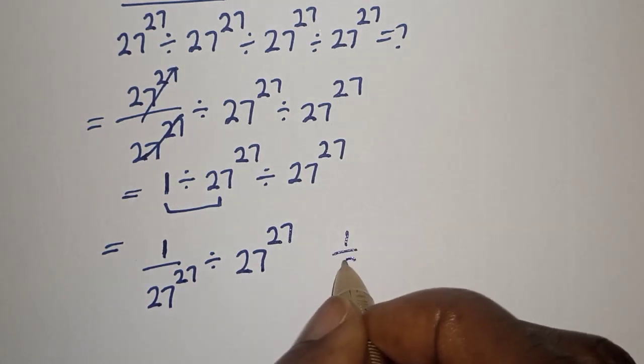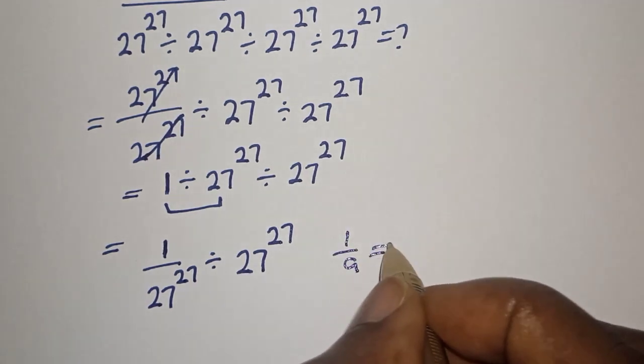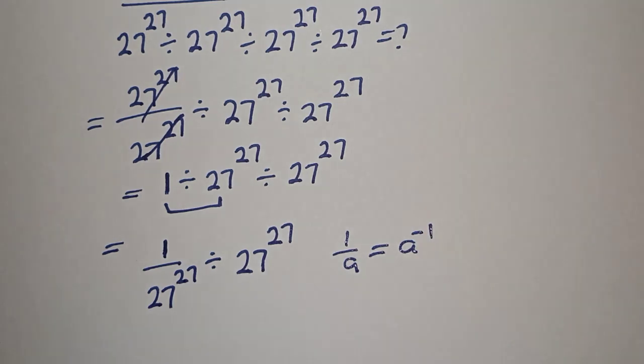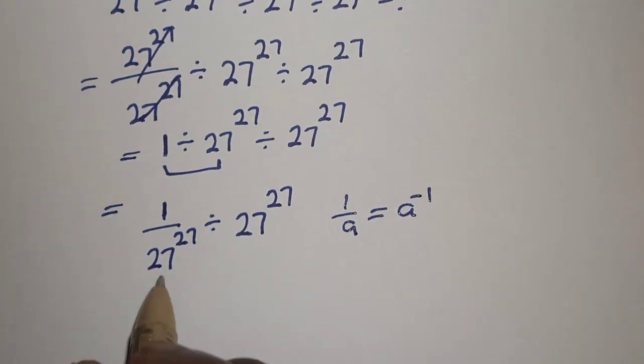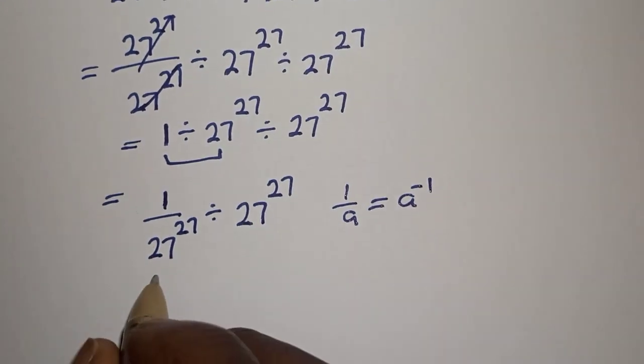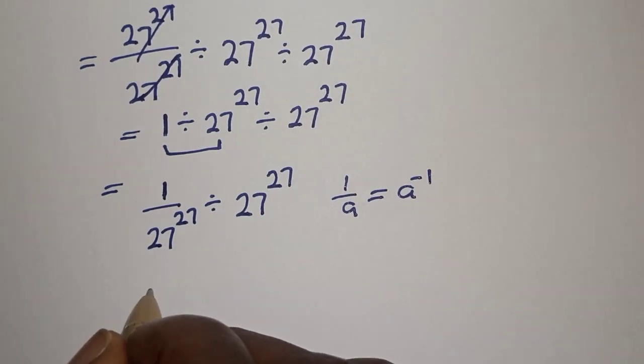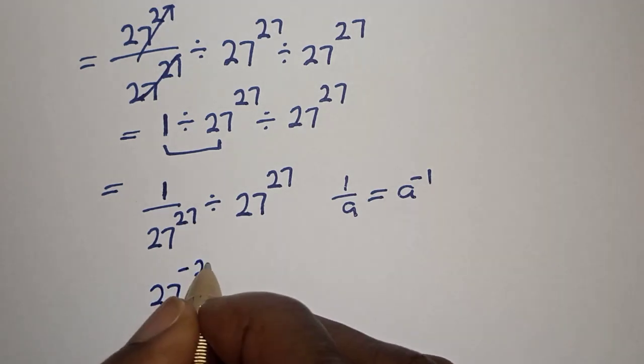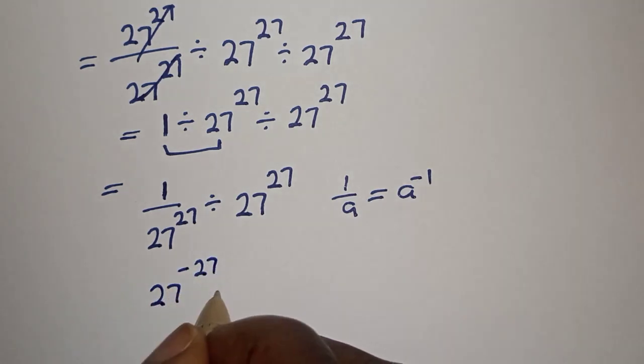Now if you have 1 over a, this is equal to a raised to power minus 1. So this can be written as 27 raised to power minus 27.